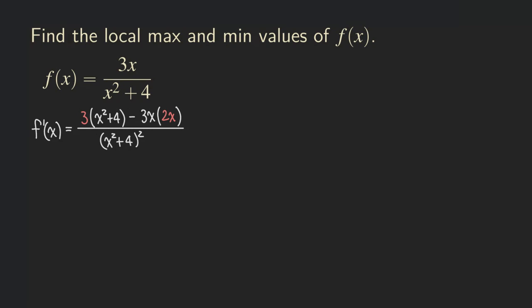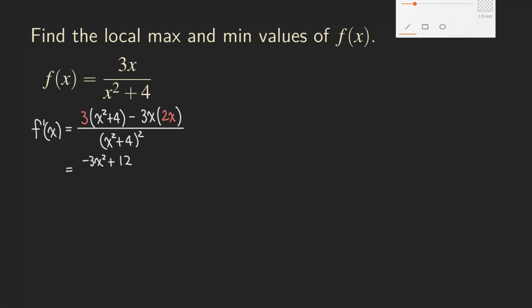We can simplify by distributing the three and combining like terms. We have three x squared and then six x squared, so when we subtract them we get negative three x squared. And then the remaining term is three times four, which is 12.